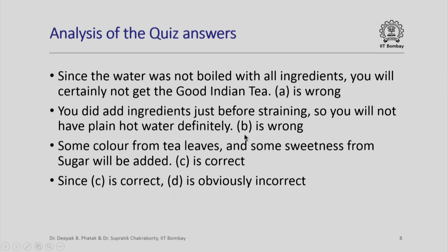The second option B says that we will get hot water. That is not correct because we did add ingredients just before straining. Some color from the tea leaves will diffuse into the water, and some sweetness of the sugar will diffuse into the water, and therefore we will definitely not get clean hot water. Therefore, B is wrong. Because of the reasons just mentioned — some color from tea leaves and some sweetness from sugar will get added to the water — a funny kind of mixture is what will result. C is thus correct, and since C is correct, D is obviously incorrect.